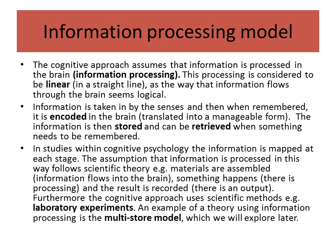The information processing model suggests that the brain processes information in a linear way — like a flow diagram. Information is taken in by the senses and, when remembered, encoded into the brain. It can then be stored and later retrieved. Studies in cognitive psychology map information at every stage, such as the multi-store model, which follows this linear process from sensory to short-term to long-term memory.